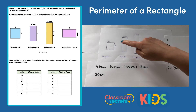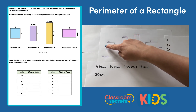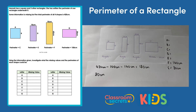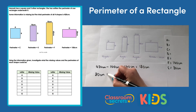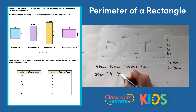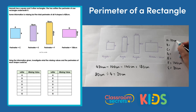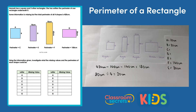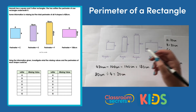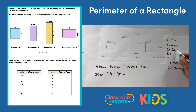I therefore know that each of these sides must be exactly the same length. So if I have 4 sides, I can do 80cm divided by 4, which would give me 20cm for each length. So that means that A and B must both be 20cm. We also have our perimeter, which is C, and that's 80cm.